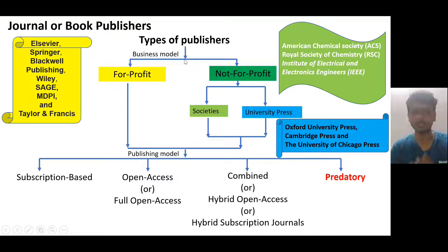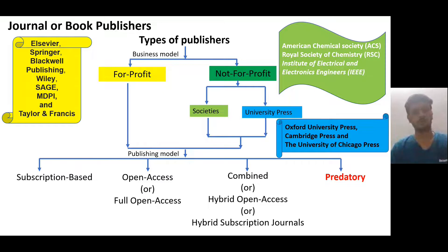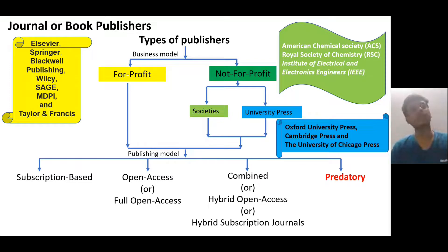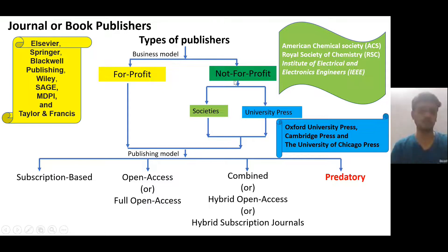Based on their business models, publishers are classified into two types: for-profit organizations and not-for-profit organizations. For-profit publishers operate entirely for profit — though they safeguard scientific literature, they sell all their articles. Not-for-profit publishers do not focus on profits; they survive on nominal subscription charges.